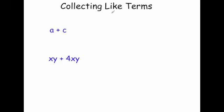Now this topic — collecting like terms — is about simplifying expressions. In algebra, whenever you're adding different letters you can't simplify them; you can only collect like terms. So you could add a's to a's, b's to b's, c's to c's, numbers to numbers, x squareds to x squareds. You can only add the same terms. So here with a plus c, you can't add a and c together — it would just stay as a plus c. You can't add different letters or different terms together.